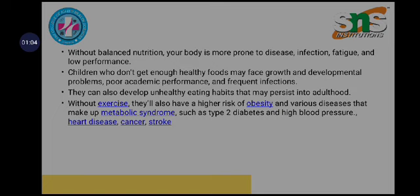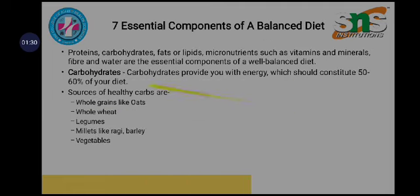Without a balanced diet, your body is more prone to disease, infection, fatigue, and low performance. Children who do not eat healthy foods may experience growth and developmental problems, poor academic performance, and frequent infections. Lack of exercise also leads to a high risk of obesity, metabolic syndrome, heart disease, cancer, and stroke. There are seven important components of a balanced diet: proteins, carbohydrates, fats or lipids, micronutrients such as vitamins and minerals, fiber, and water.